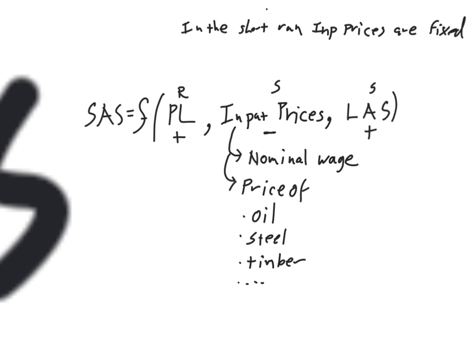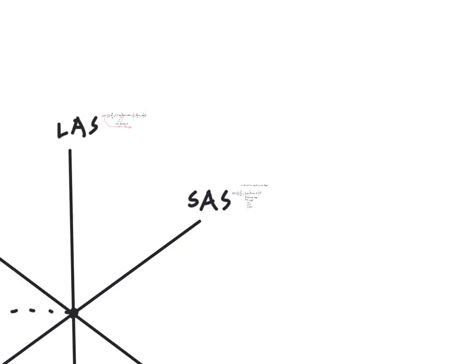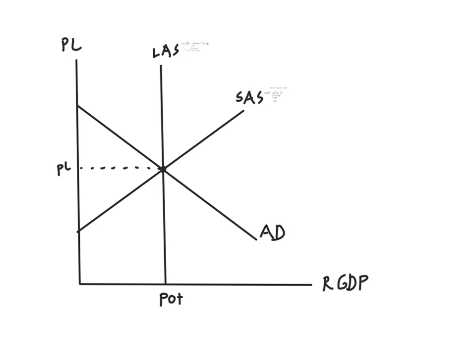Our next video will feature a discussion of our final relationship in the model — factors that shift aggregate demand. This video is our final video in setting up the foundational concepts of the AS-AD model. We've discussed changes in CPI and real GDP, factors that shift long-run aggregate supply, and factors that shift SAS. Now we'll discuss factors that shift aggregate demand. This is a nice checkpoint to think: do I remember the shift factors for short-run aggregate supply? If not, feel free to watch those videos again.